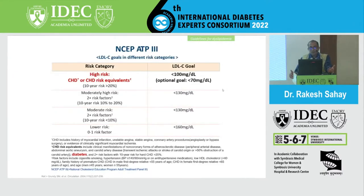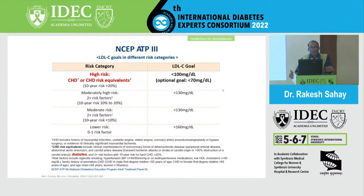Looking back at what the NCEP goals were about 20 years back — this is 2004 — they suggested less than 100 as the goal for high-risk individuals, with an optimal goal of 70. Moderately high-risk patients, meaning diabetes with one more risk factor, were targeted at less than 130. Those with lower risk, non-diabetics or with one cardiovascular risk factor, were suggested 160 as a cutoff.